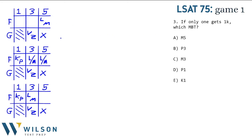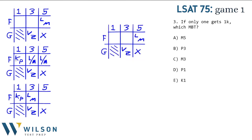Question three asks: if only one employee receives a $1,000 bonus, what must be true? That can only happen in world two. In worlds one and three, both K and P get $1,000. So we're in world two, and we don't care which of L or M is at $5,000 vs. $3,000. What must be true? M has to get a $5,000 bonus — wait, that's not necessarily true either. P getting $3,000 could be true but doesn't have to be. M getting $3,000 can't even be true here. P getting $1,000 could be true but doesn't have to be. K getting $1,000 doesn't have to be true. So answer A — L and M must have higher bonuses — is the only correct answer.